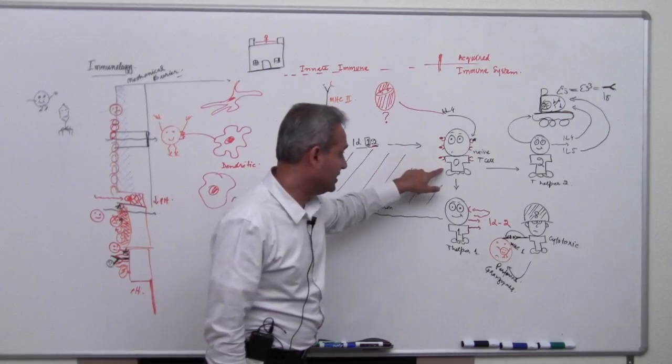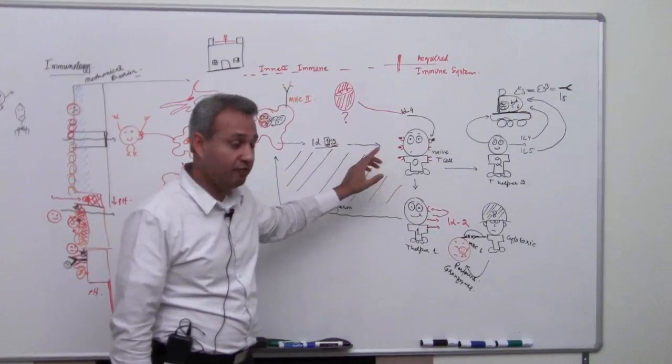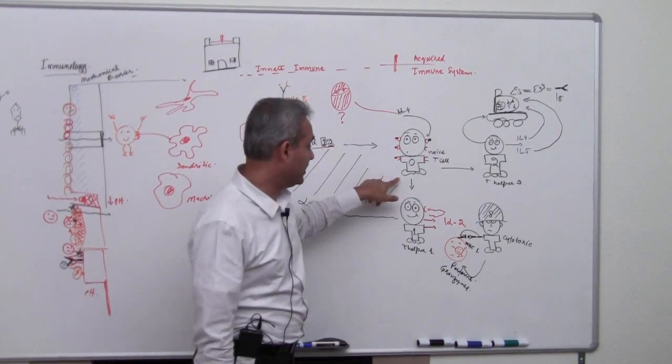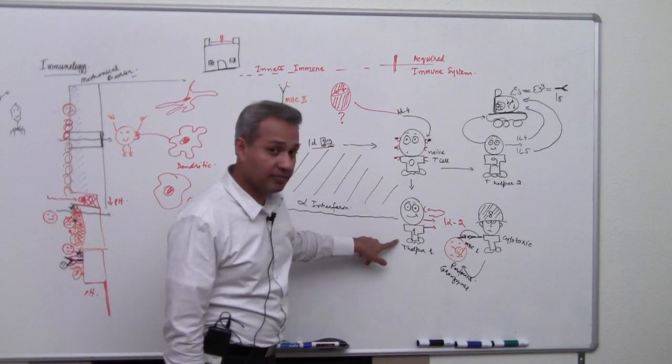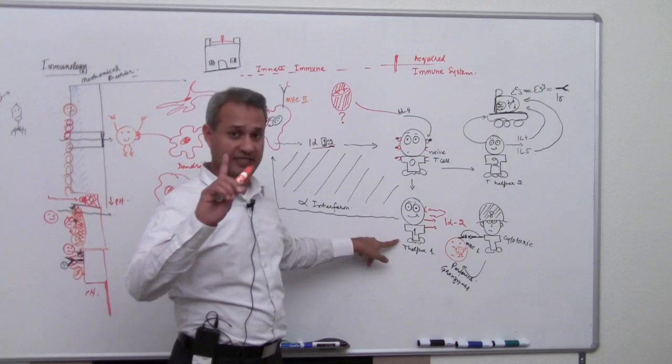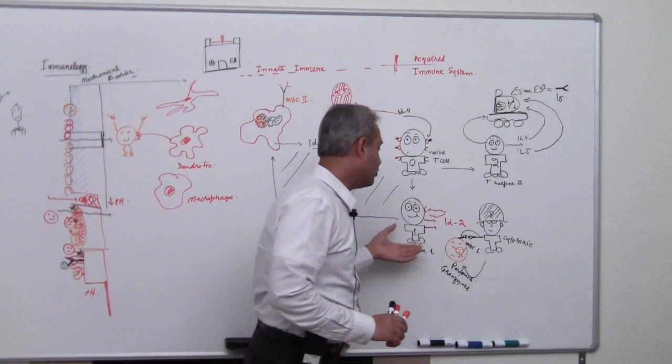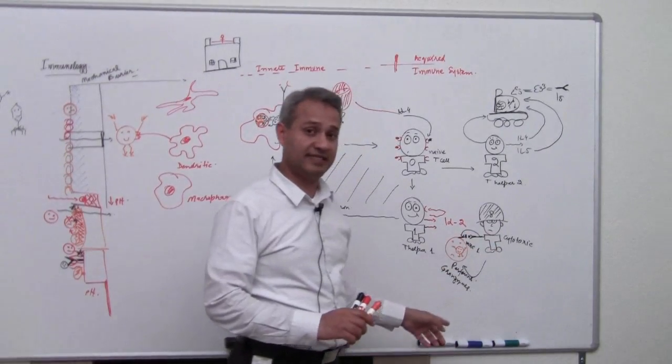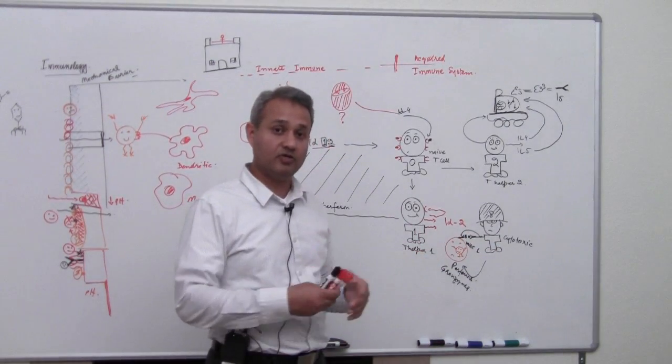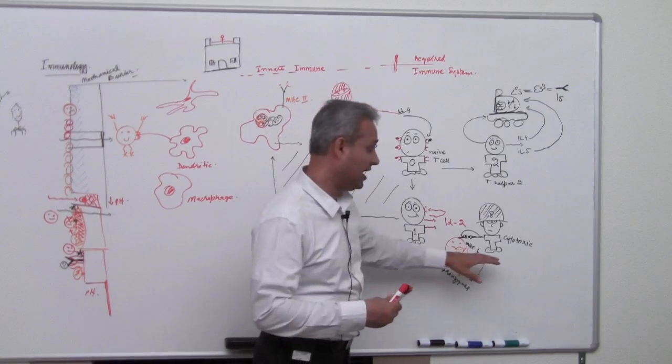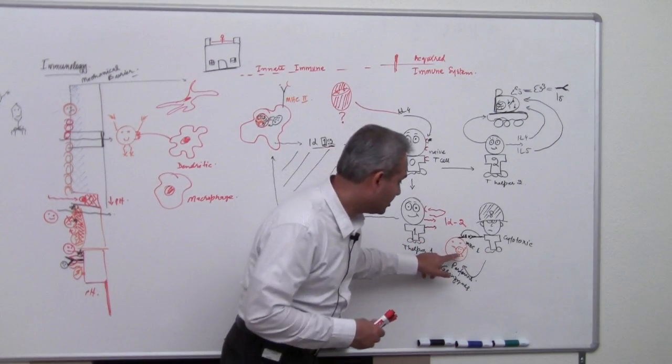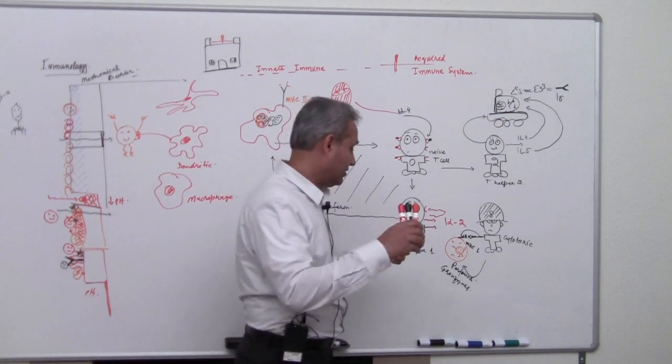IL-12 would cause the naive T cell which is part of acquired arm. It would activate the naive T cell which would become a helper T cell, helper T cell 1. The helper T cell 1 would then secrete interleukin 2 which would cause cytotoxic T cells to become active. So cytotoxic T cells are really bad. These guys are going to pick up cells which have gotten pathogens hiding in them and then kill them.